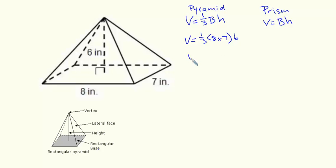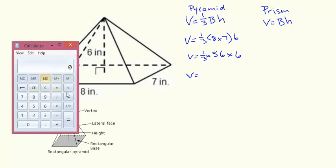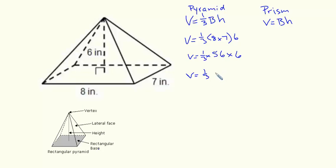So 8 times 7 is 56, so we have one-third times 56 times 6. I'm just going to work out 56 times 6. We're just multiplying at this point, so it doesn't matter which order you multiply. 56 times 6 is going to give me 336.